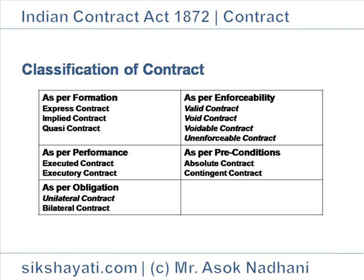B agrees and pays Rs. 1,00,000 to A and asks A to deliver the car. It constitutes an express contract as the terms are expressly stated by one party and expressly accepted by the other. Implied Contract: there may not be an express offer and acceptance, but offer and acceptance is inferred by the acts or conduct of the parties, and accordingly a contract is formed.